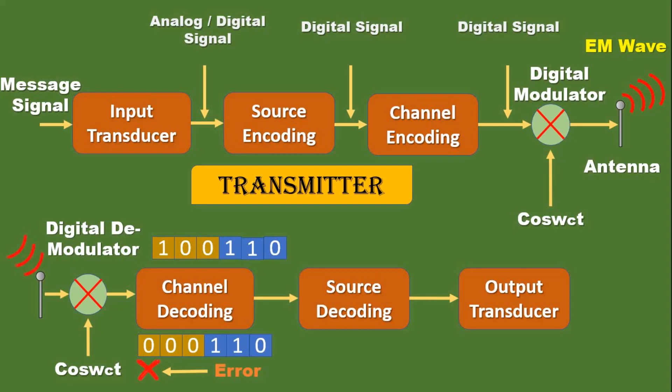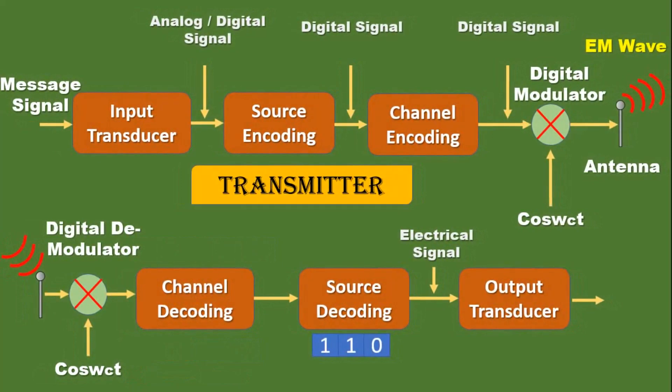Suppose at the time of transmission there is an error in the channel code. Our original data is 100110, but when we receive the data, we are receiving 000110. So instead of a 1, we get a 0 for a particular bit — that is called an error. That error is eliminated by the channel decoder, which then gives the compressed signal to the source decoder. In the source decoder, pure digital output is obtained without loss of information.